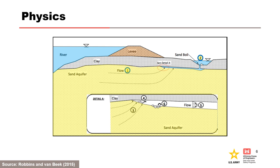The physics of backward erosion piping includes: 1. Darcyan flow; 2. Exit-related hydraulic conditions such as orifice flow, pipe flow, or constant head boundary conditions; 3. Liquefaction or fluidization at the pipe head due to concentrated flow, leading to 4. Occasional bursts of high suspension solids into the pipe; 5. Laminar flow conditions in the open pipe, which cause 6. Sediment transport along the bottom of the pipe. All six must be occurring simultaneously for piping to progress to failure.